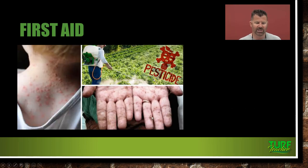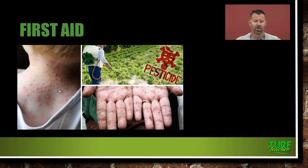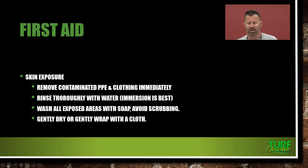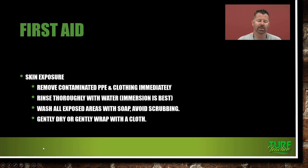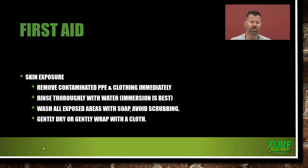First aid for skin exposure: if you get pesticide on your hand and you're hot and wiping sweat — boom, you've got it all over you if you're not wearing gloves. Remove the contaminated PPE and clothing immediately. Rinse thoroughly with water — immersion is best. Wash all exposed areas with soap, avoid scrubbing, and then gently dry or wrap with cloth.